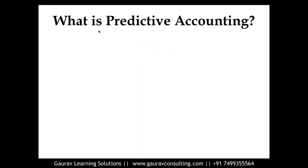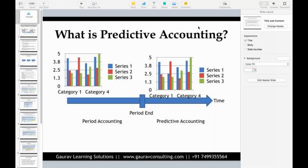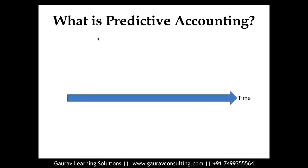In order to understand predictive accounting, let's take this example. This is a time axis, and you can see there is a period. Let's consider today is the last day of the month — we are here on 31st of October 2019. This date is very important for the business because they need to carry out all reporting for the month of October.